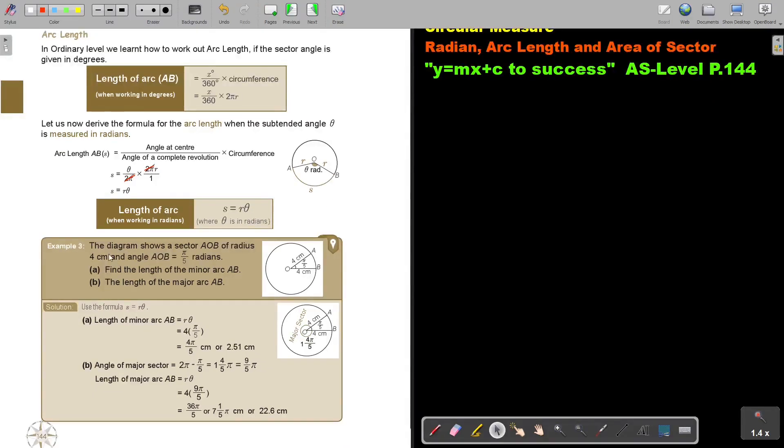The diagram shows a sector ALB of radius 4 cm and angle ALB is π/5 radians. Find the length of the minor arc AB. Now the minor sounds like small, so that is small. And then find the length of the major arc - that is the major.